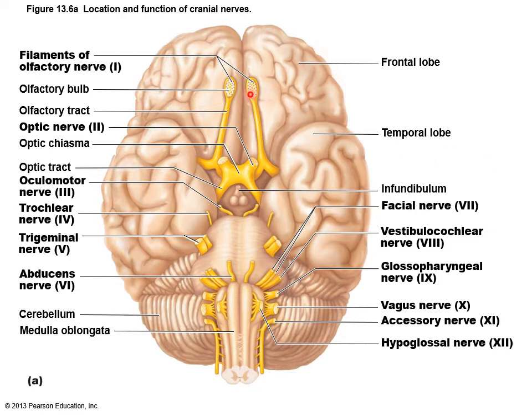You can save these to a note card for test purposes. Number one, the olfactory nerve, is sensory for smell. Number two, the optic nerve, is sensory for vision. Skipping to number eight, the vestibulocochlear nerve is primarily sensory for hearing and equilibrium. Those three fall into the purely sensory cranial nerves.